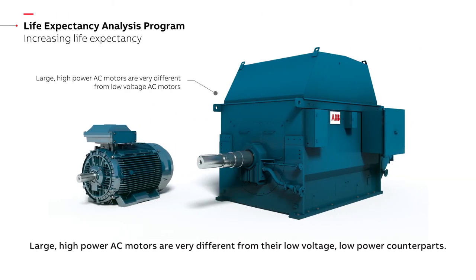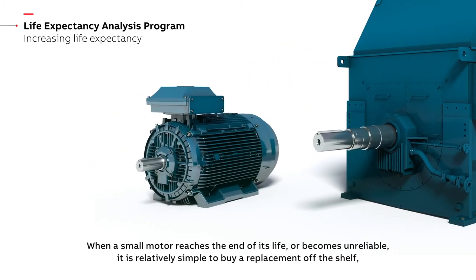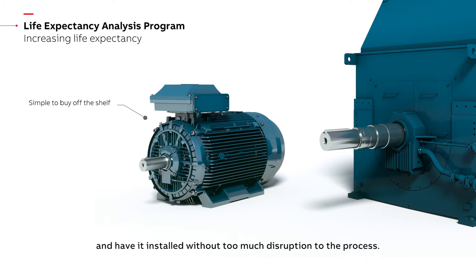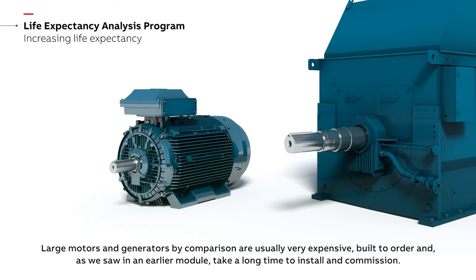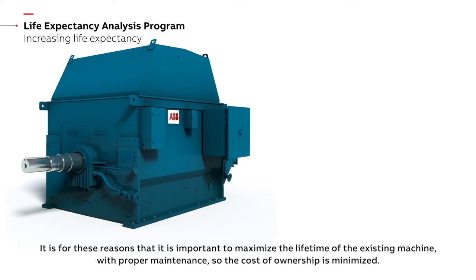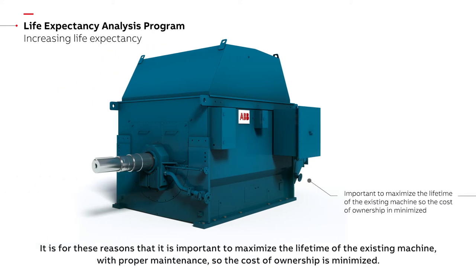Large high powered AC motors are very different from their low voltage low power counterparts. When a small motor reaches the end of its life or becomes unreliable, it is relatively simple to buy a replacement off the shelf and have it installed without too much disruption to the process. Large motors and generators by comparison are usually very expensive, built to order and take a long time to install and commission. It is for these reasons that it is important to maximize the lifetime of the existing machine with proper maintenance so the cost of ownership is minimized.